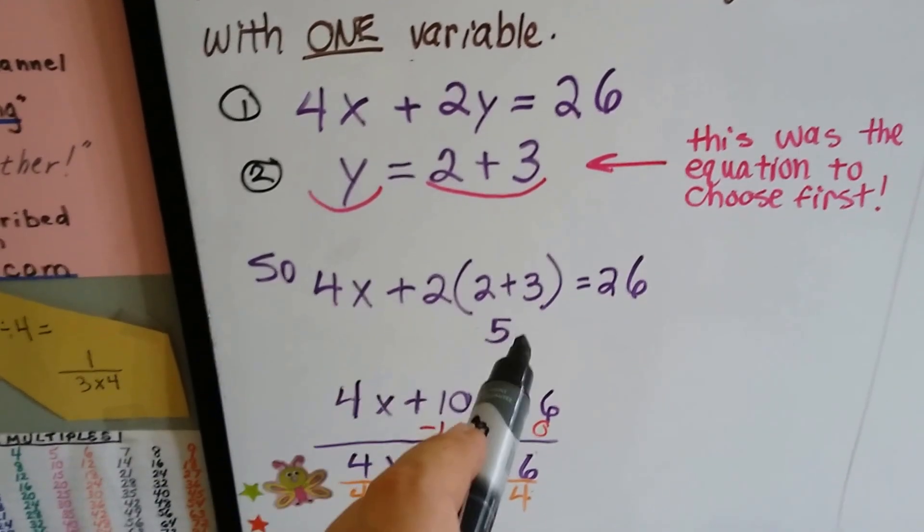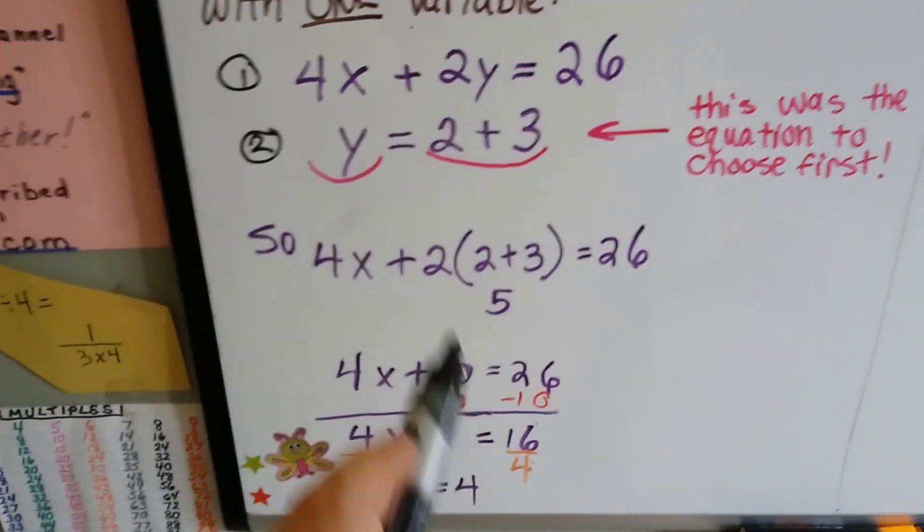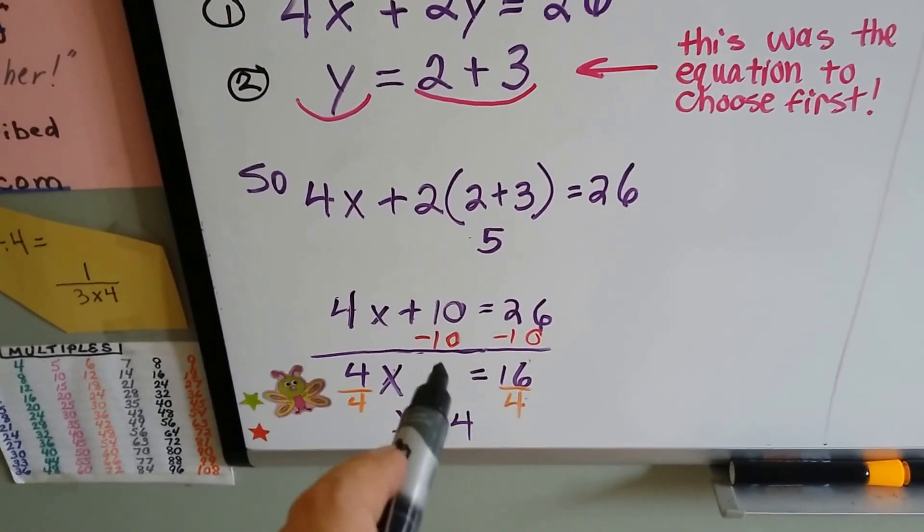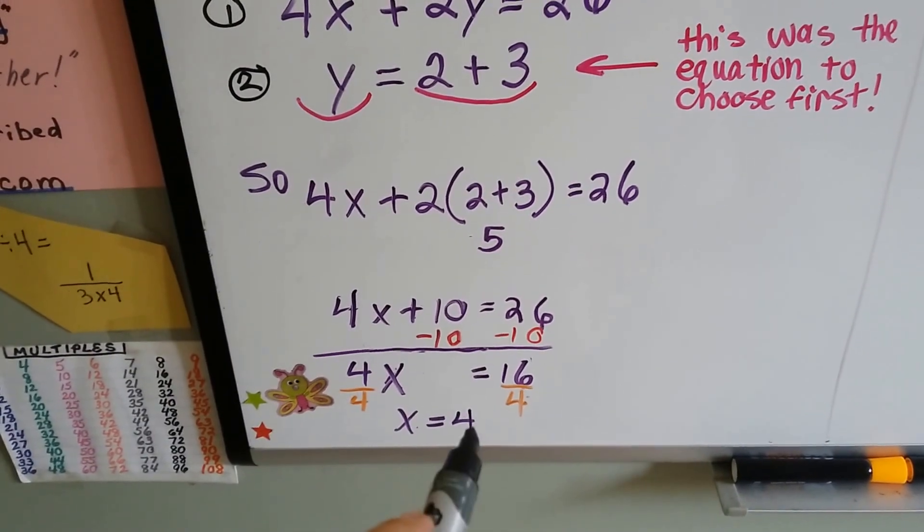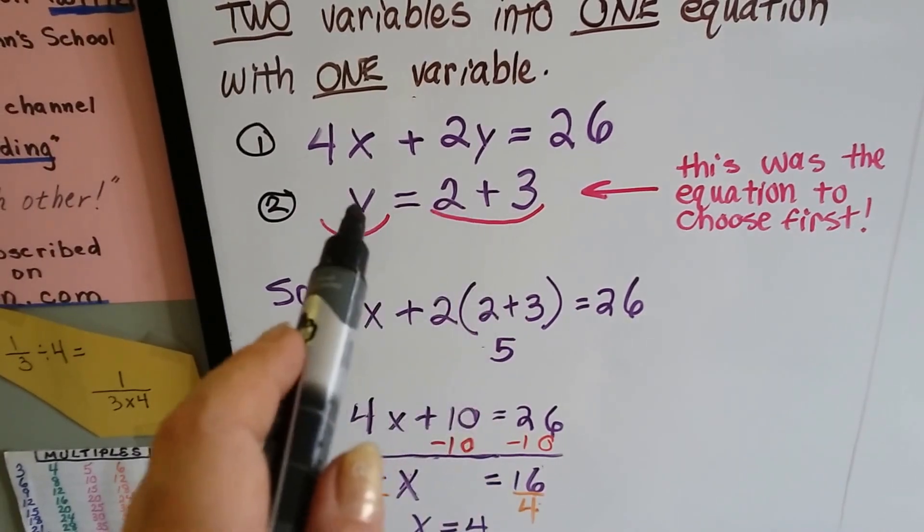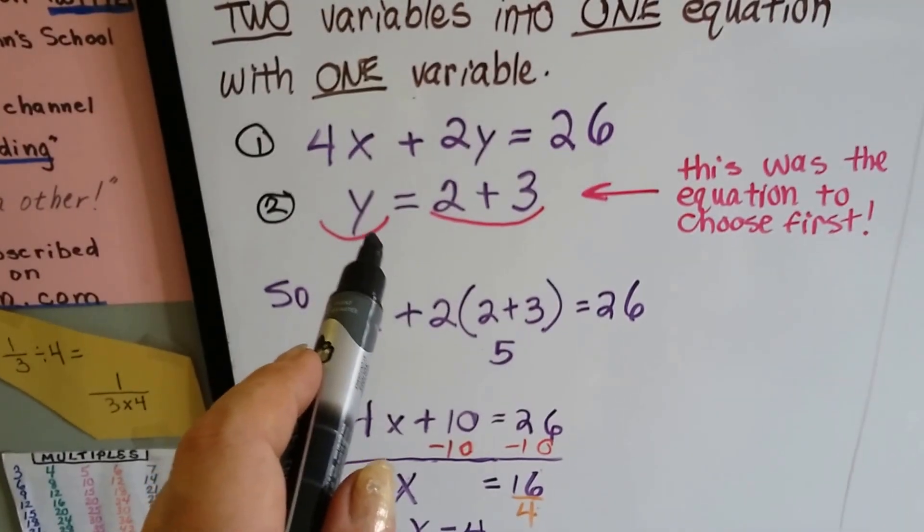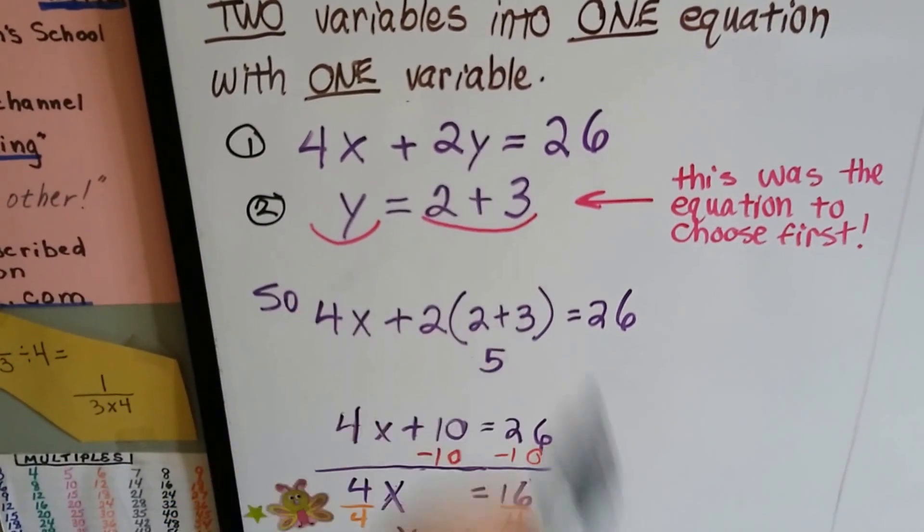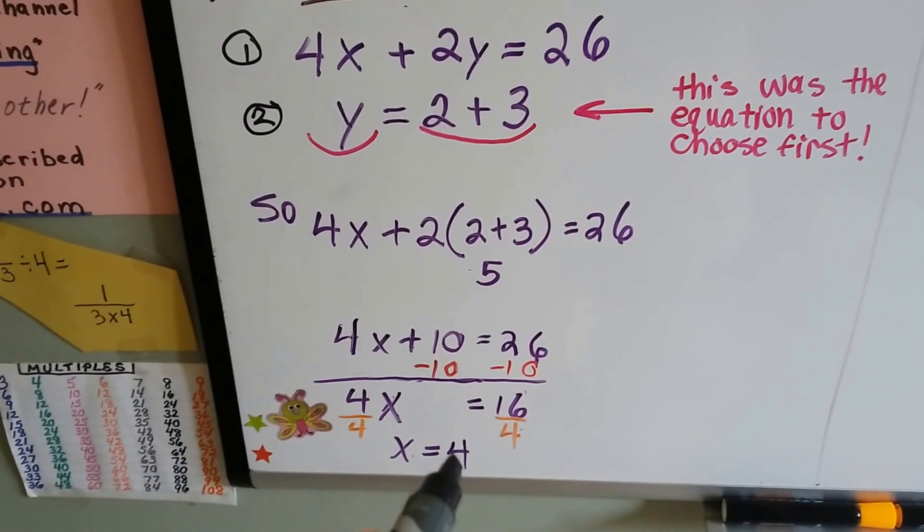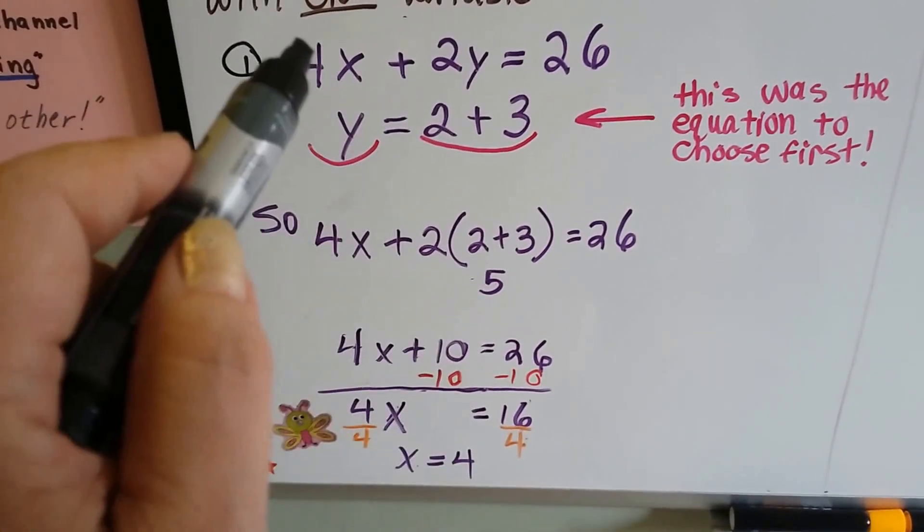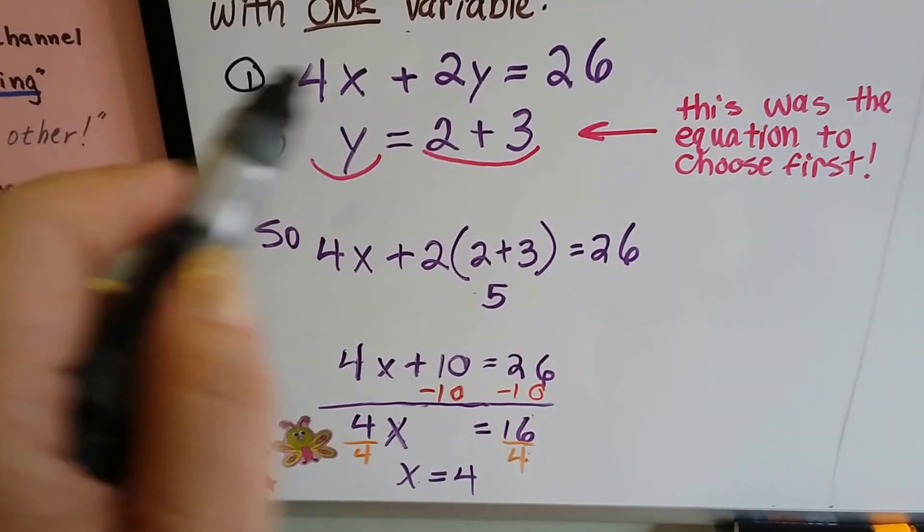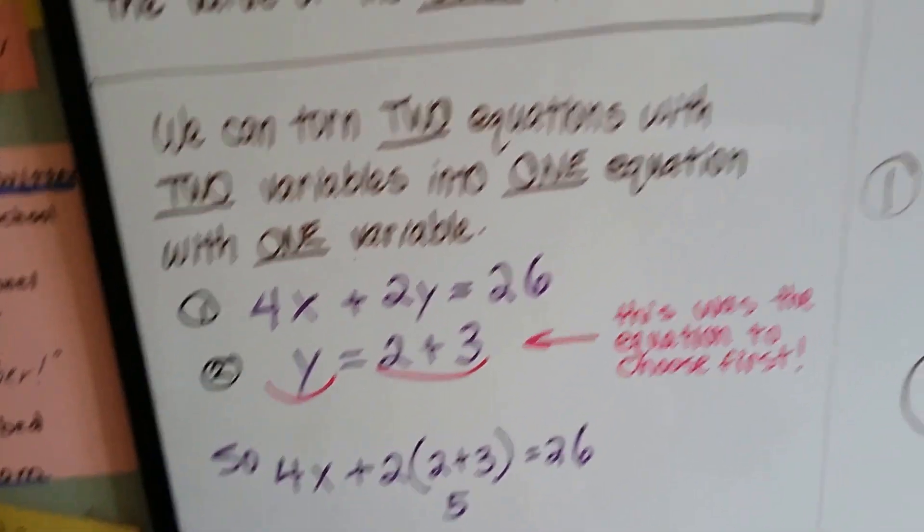That's a 5. So we have 2 times 5, so that's 4x plus 10. 2 times 5 is 10. We subtract 10 from each side, and we see that 4x equals 16 and that x equals 4. So by substituting this 2x + 3 for the y, because it says that's what y equals, by substituting that into this equation for where the y is, we were able to find out what x is. Now we can go back and plug this x equals 4 into this one to see if we got it right. That's all substitution is.